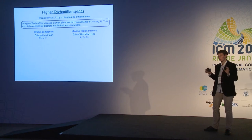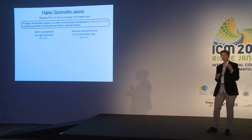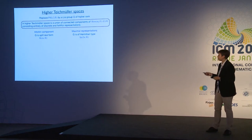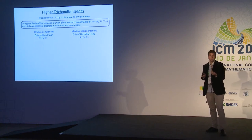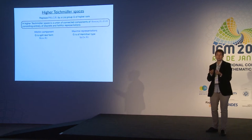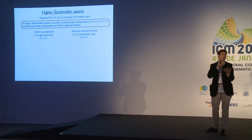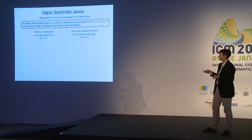The discovery of higher Teichmüller spaces came from very different areas of mathematics and they come in two families. There is the Hitchin component, defined by Hitchin, which exists when the group G is a split real form — think of SL(n,ℝ). The other family is the space of maximal representations, which exists for Lie groups of Hermitian type — meaning the symmetric space of G is a Hermitian symmetric space carrying a Kähler form invariant under the isometry group.